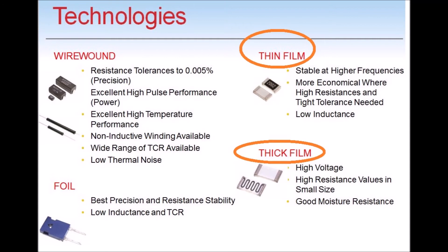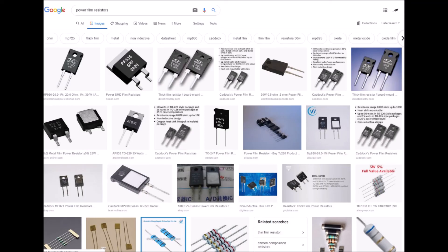Thin and thick film resistors are really not axial lead types — these are almost like surface mounts. Thin film resistors are made by depositing an extremely thin layer of nickel-chromium resistive film on an aluminum oxide substrate. Thin film technology offers extreme precision and stability, tight tolerances, and low TCR values — though they're likely expensive. However, these resistors have relatively limited surge capabilities, meaning you can blow them really easily.